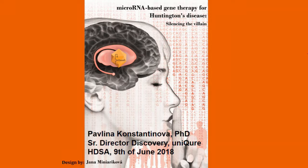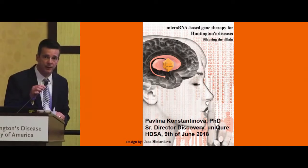Welcome to the Huntington lowering session. This morning we heard about Ionis and Roche's ASO approach, as well as the Wave allele-selective ASO. We're going to talk about different approaches to target Huntington. There are lots of ways to target the DNA, RNA, or protein to get rid of the bad protein. The first presenter is Dr. Pavlina Konstantinova from UniQure, who will talk about gene therapy using AAV viruses to deliver microRNAs to lower expression of the Huntington protein.